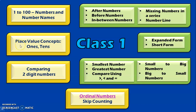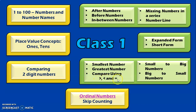The next learning outcome is place value concepts. In class 1, we will be dealing with two-digit numbers. We will learn about the place values 1s and 10s, and also how to write them in expanded form and short form. The next learning outcome is comparing two-digit numbers — identifying the smallest number, greatest number, comparing using symbols greater than, less than and equal to, and writing numbers from small to big and big to small.